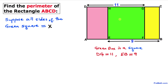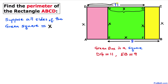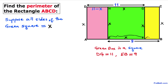Since the green box is a square, if I call one side x, then all sides are x as well. Since all side lengths of the square are equal, this side is x and this side is x. Now focusing on these segments: the total length DG is 11, so this remaining segment is 11 minus x. Likewise, since EB is 9 and one side is x, this segment is 9 minus x.